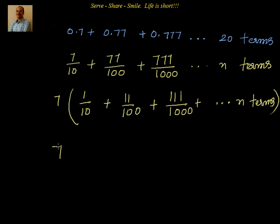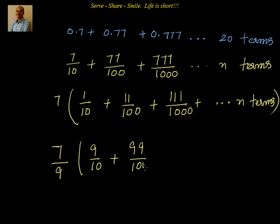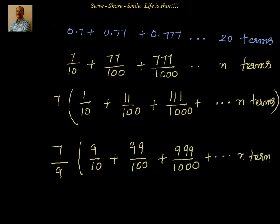Next, since we can't directly see an arithmetic or geometric progression, we multiply and divide by 9. This converts the terms to 9/10, 99/100, 999/1000, and so on. We do this because it becomes easy to write each term as 1 minus 1/10, 1 minus 1/100, 1 minus 1/1000, making it straightforward to extract a geometric progression.